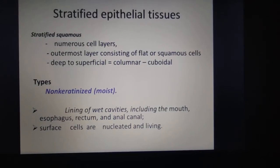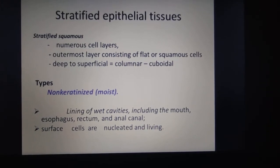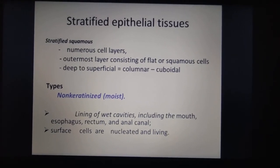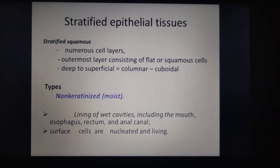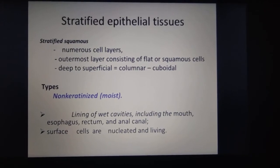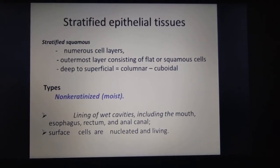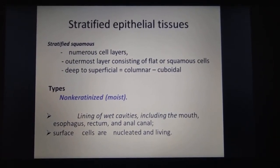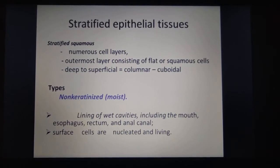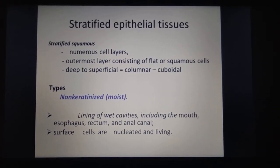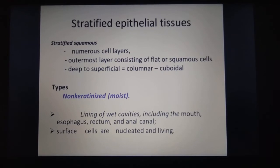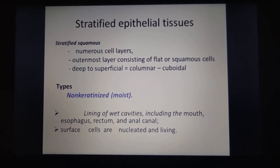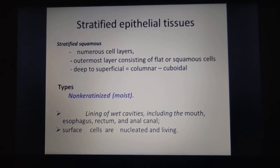Simple epithelial tissue has three types: simple squamous, simple cuboidal, and simple columnar epithelium. Now, stratified epithelial tissue has numerous cell layers — also called compound epithelium, with two or more layers. The outermost layer consists of flat or squamous cells, while deeper layers can be columnar, cuboidal, or even polygonal cells.